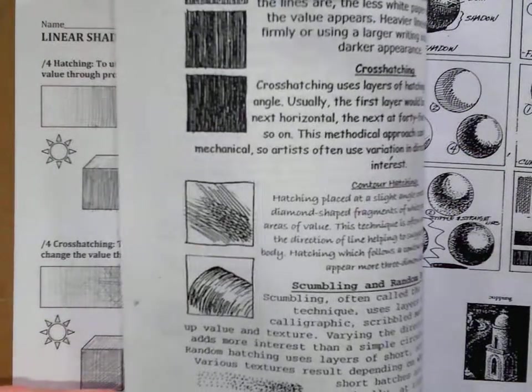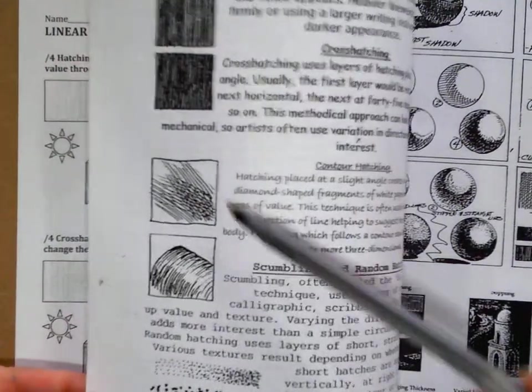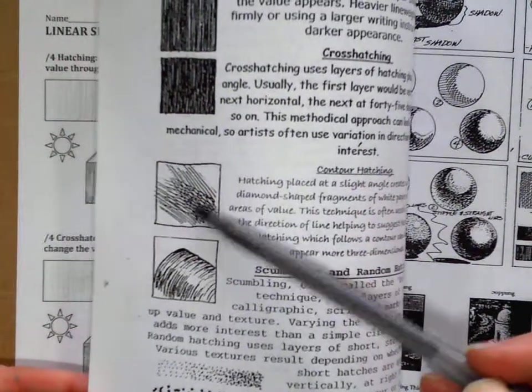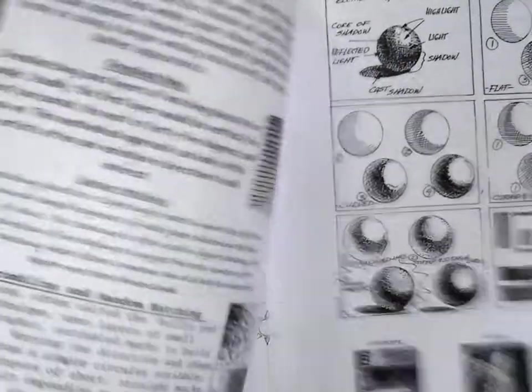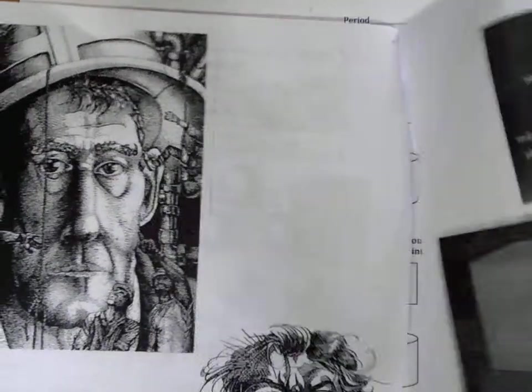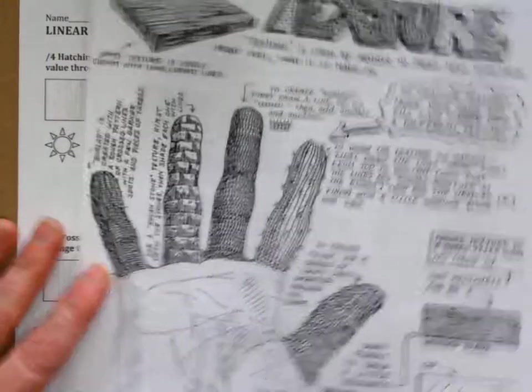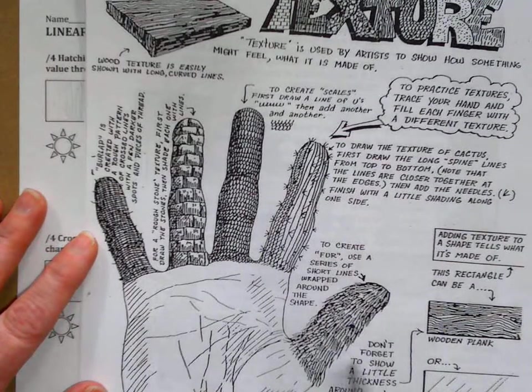What we didn't do was hatching, which is going in a single direction, or crosshatching, which is where you go multiple directions to change value. You have a lot of examples in that packet you were given originally, as well as different ways to create texture using pen techniques.